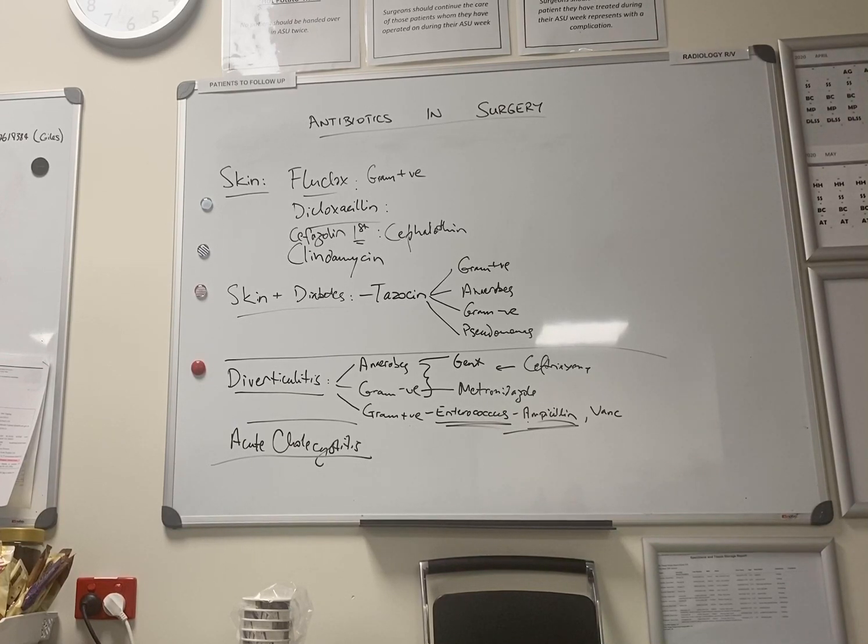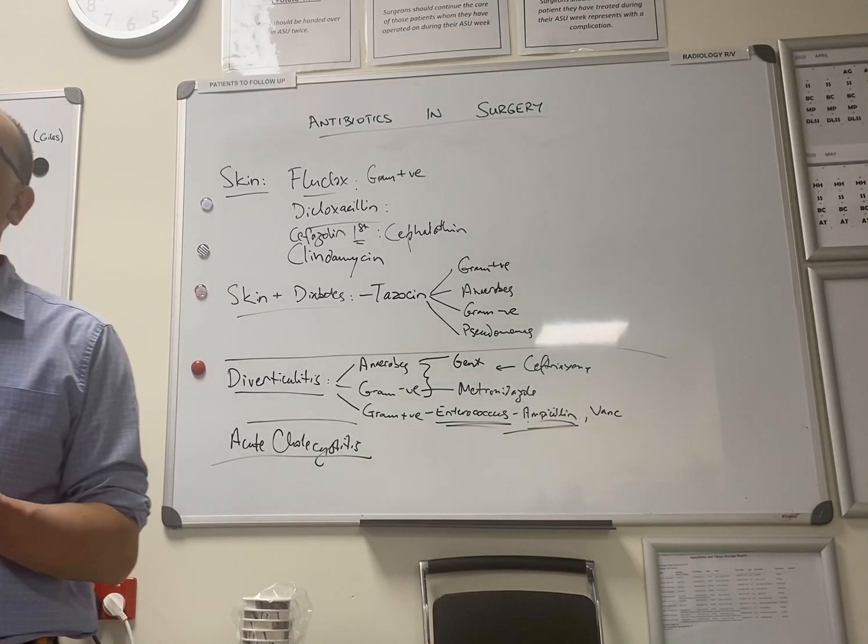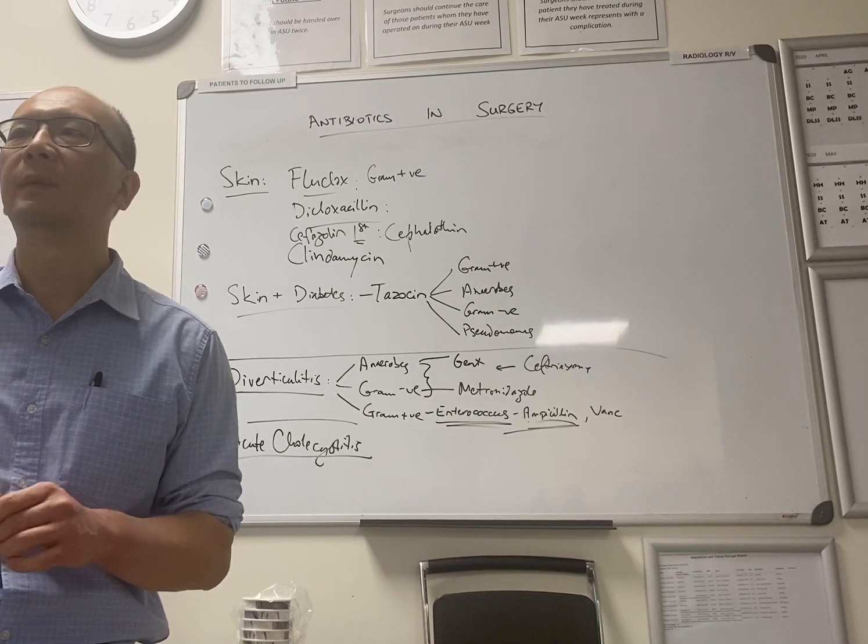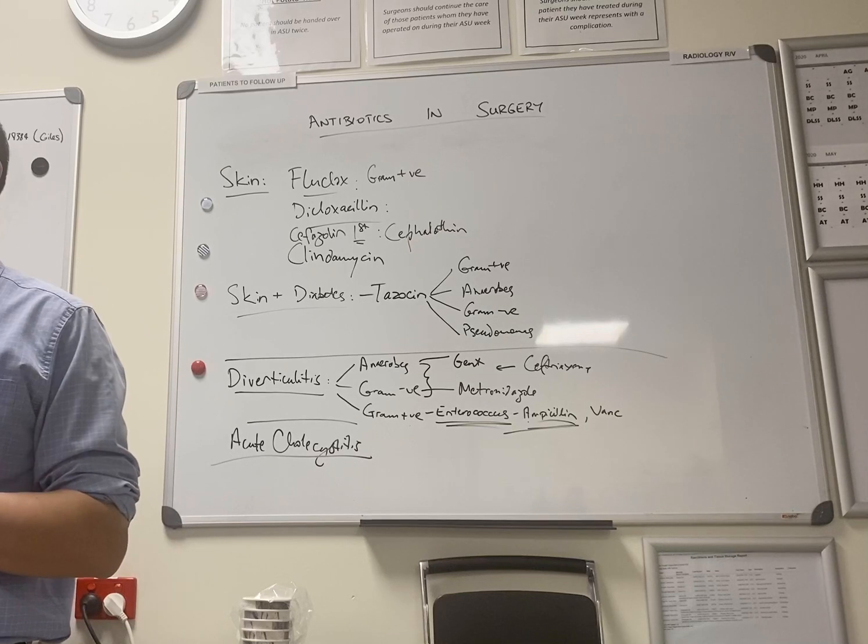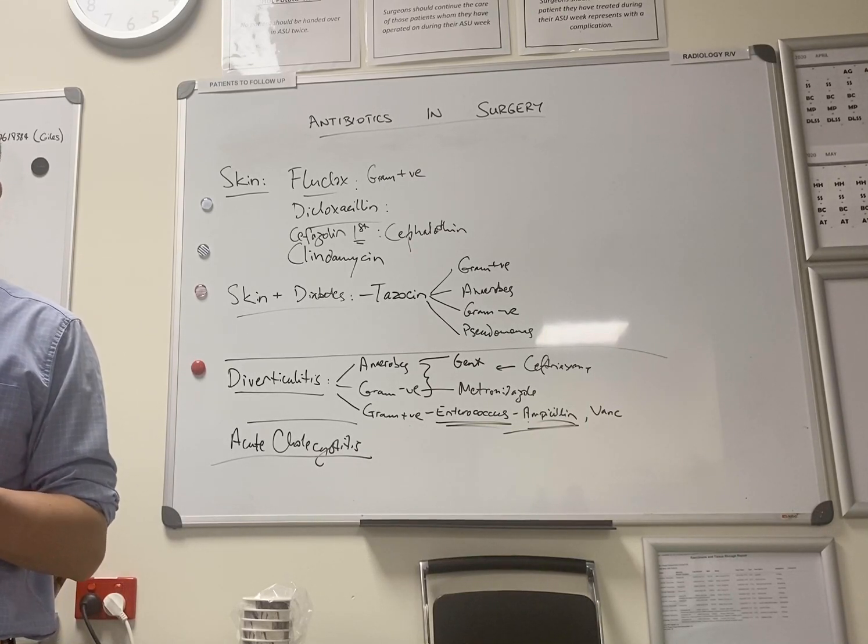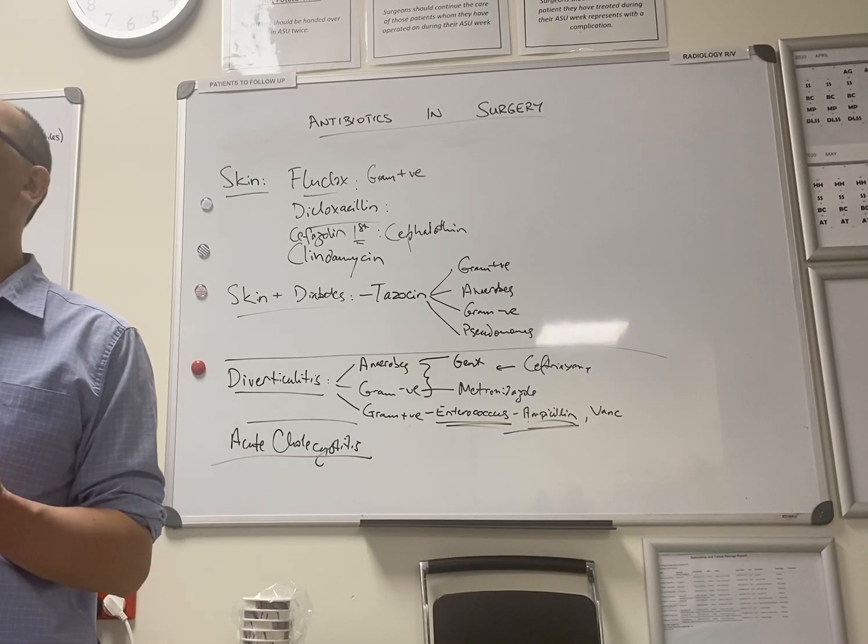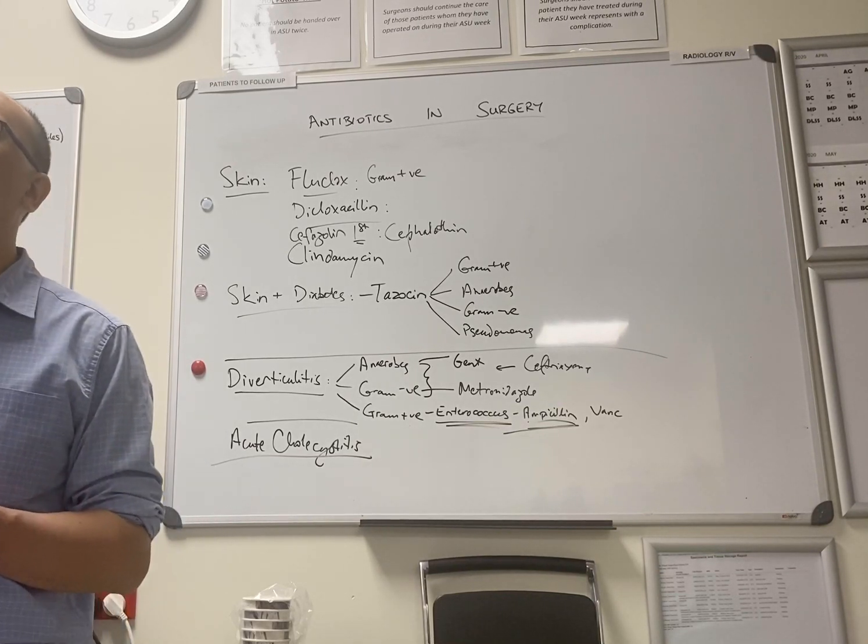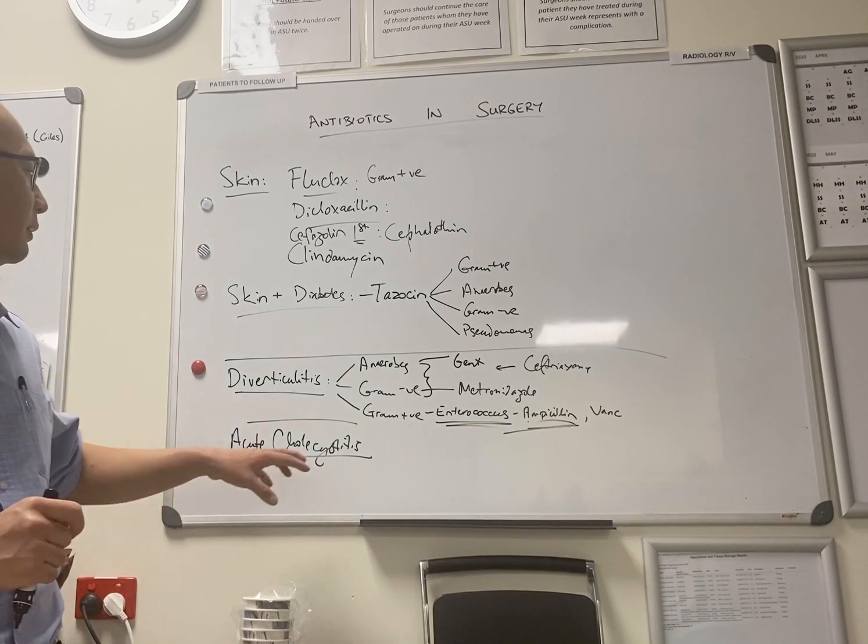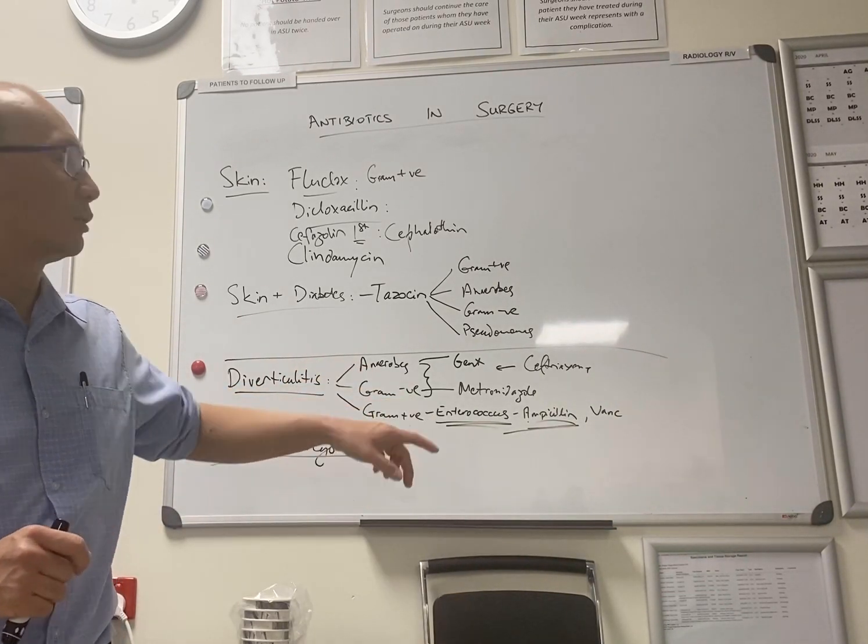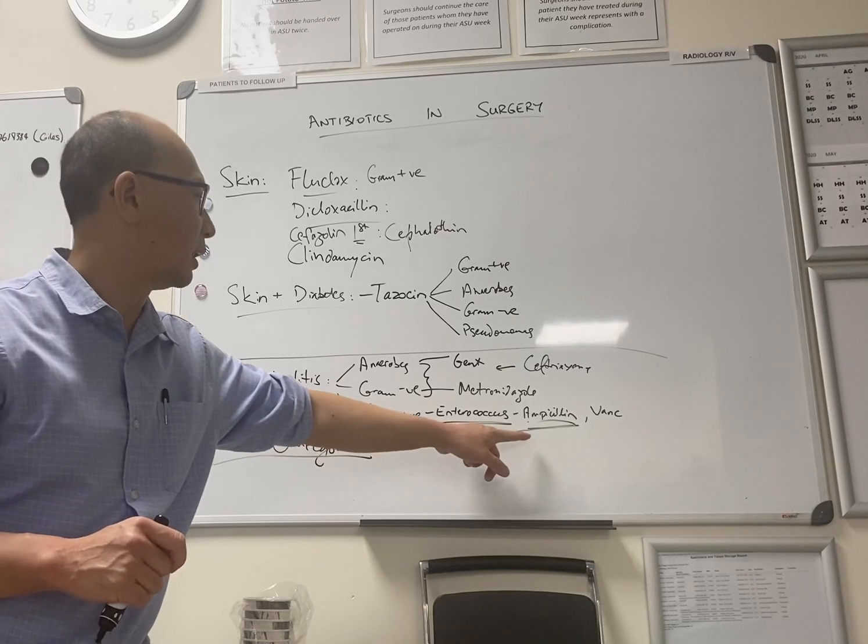But if you're worried about complications, perhaps if they're diabetic, certainly if they've had their bile duct instrumented in any way, ERCP, or they've previously had a perc drain or something like that, then you certainly need to add metronidazole. But if it's a fairly simple cholecystitis, and certainly if it's the first episode of cholecystitis, the guidelines generally just say gram-negatives and enterococcus.